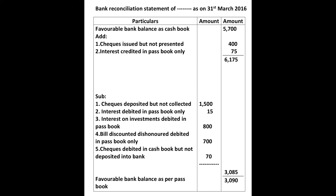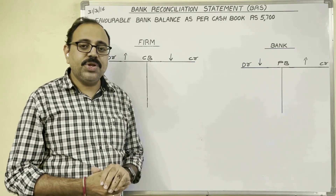All reasons have been taken in the BRS. In the outer column, three addition amounts: 5700, 400, and 75 — total 6175. In the inner column, five subtraction amounts: 1500, 15, 800, 700, and 70 — total 3085. Finally, from 6175 subtract 3085 — the answer is 3090 rupees. Since favorable bank balance as per cashbook was given, this answer is the favorable bank balance as per passbook. This is the end of the present video — hope this video is helpful to you. Thank you.